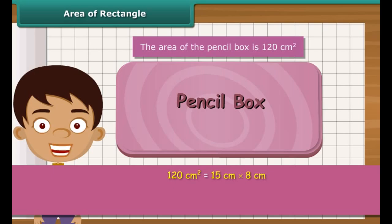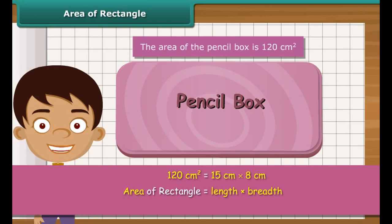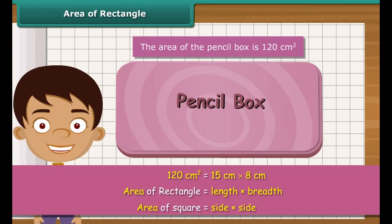So we can generalize that the area of any rectangle is obtained by multiplying its length and breadth. Since a square is a rectangle whose length and breadth are equal, the area of a square is obtained by multiplying its side by its side.